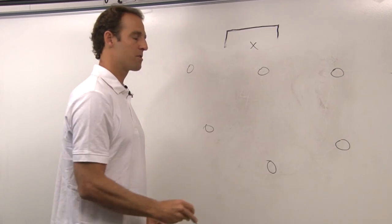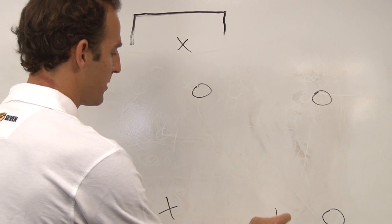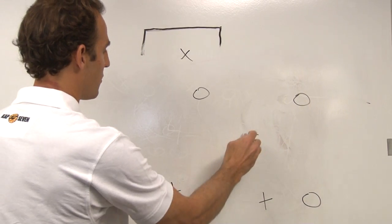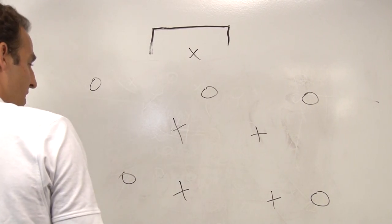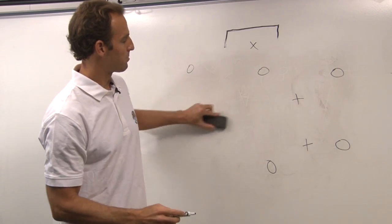When you're running the 3-3 on offense, it'll typically be two players either gapped, or they'll be back here, and the ball is mostly staying on the three players up top.